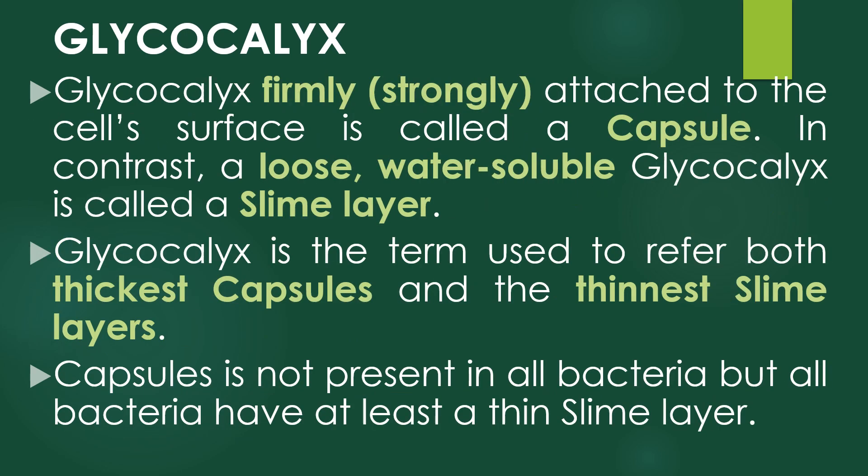When the glycocalyx of a bacterium is composed of organized repeating units of organic chemicals that are firmly or strongly attached to the cell surface, the glycocalyx is called a capsule. In contrast, a loose, water-soluble glycocalyx is called the slime layer. Glycocalyx is the currently accepted term to refer to all polysaccharide-containing substances found external to the bacterial cell wall, ranging from the thickest capsule to the thinnest slime layer.